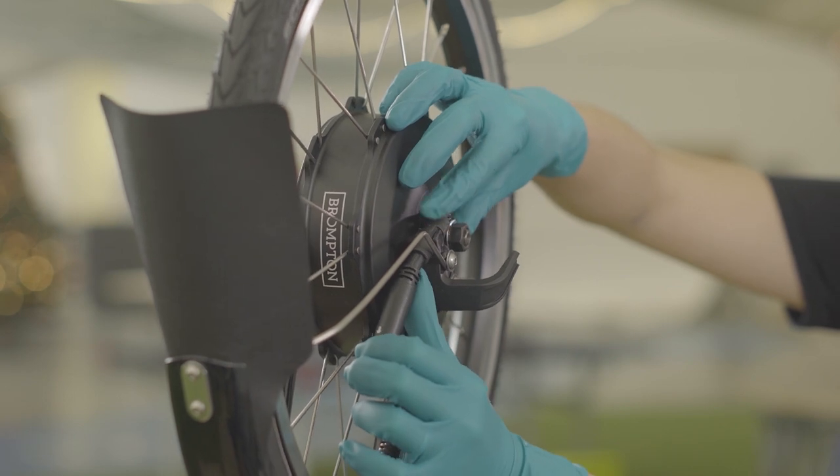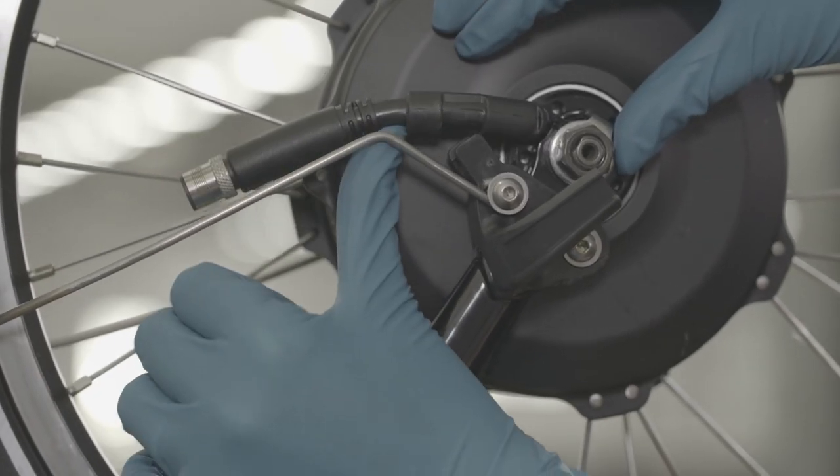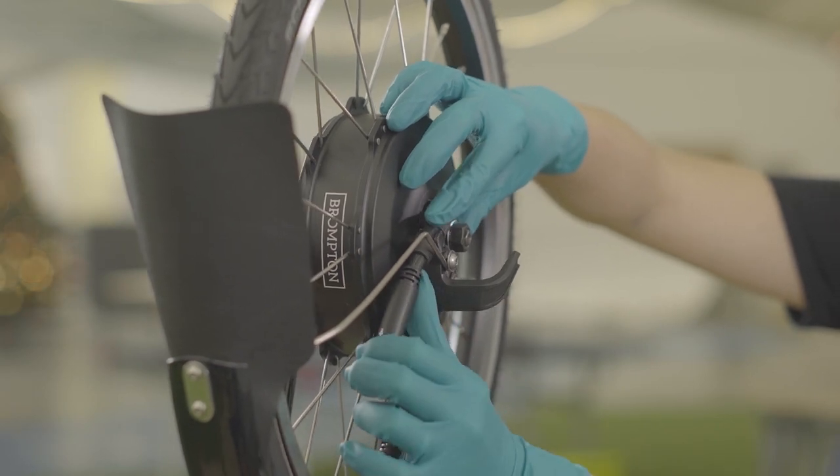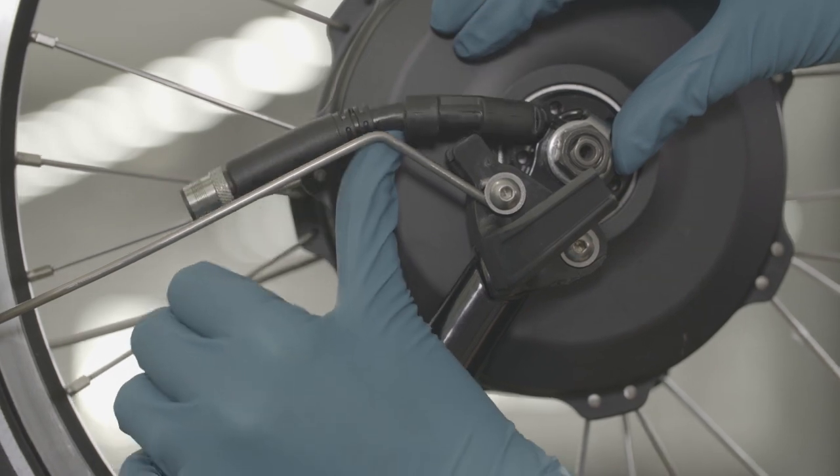The half closest to the frame is connected to the controller and will remain attached to the fork. Move the half connected to the motor outwards in a clockwise direction and unclip it from the plastic hook.